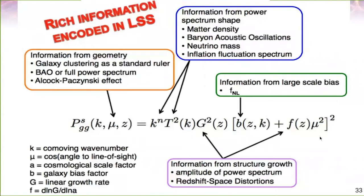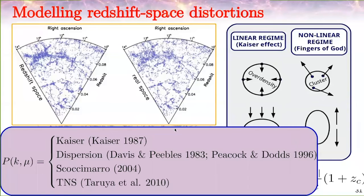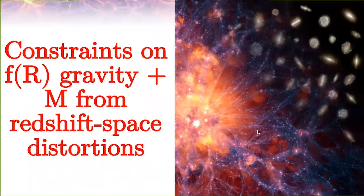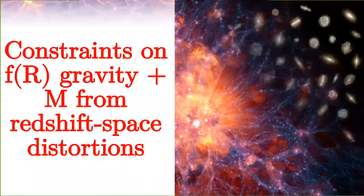We can analyze the individual multipole components — monopole, quadrupole, and hexadecapole moments — of the correlation function. To model it, we use approaches such as the Kaiser dispersion model or models including more terms from perturbation theory, to express how peculiar velocities are behaving. From the shape of the correlation function or the power spectrum, we can extract parameters.